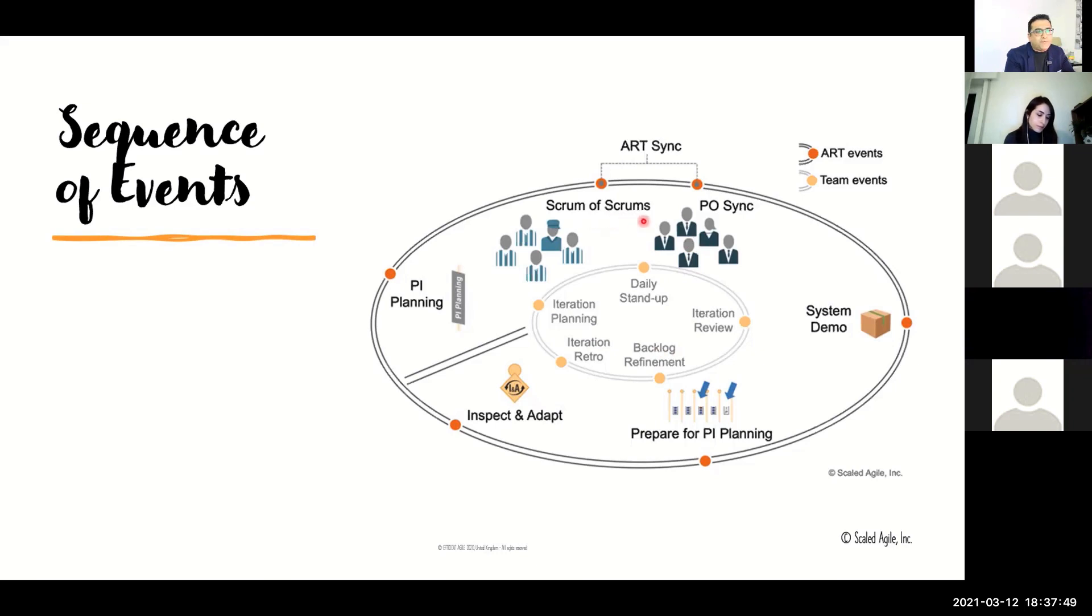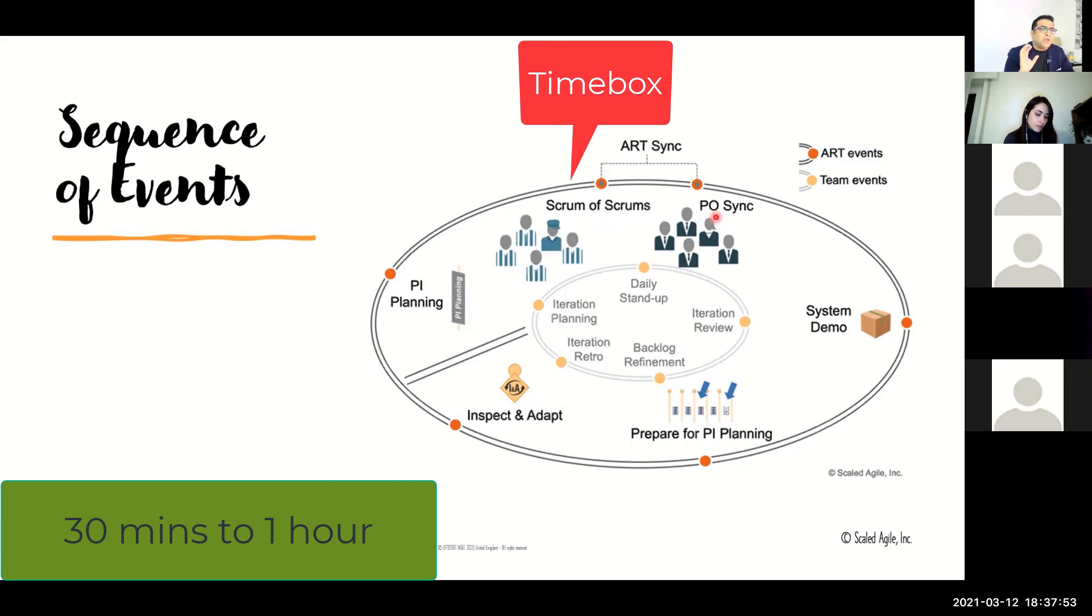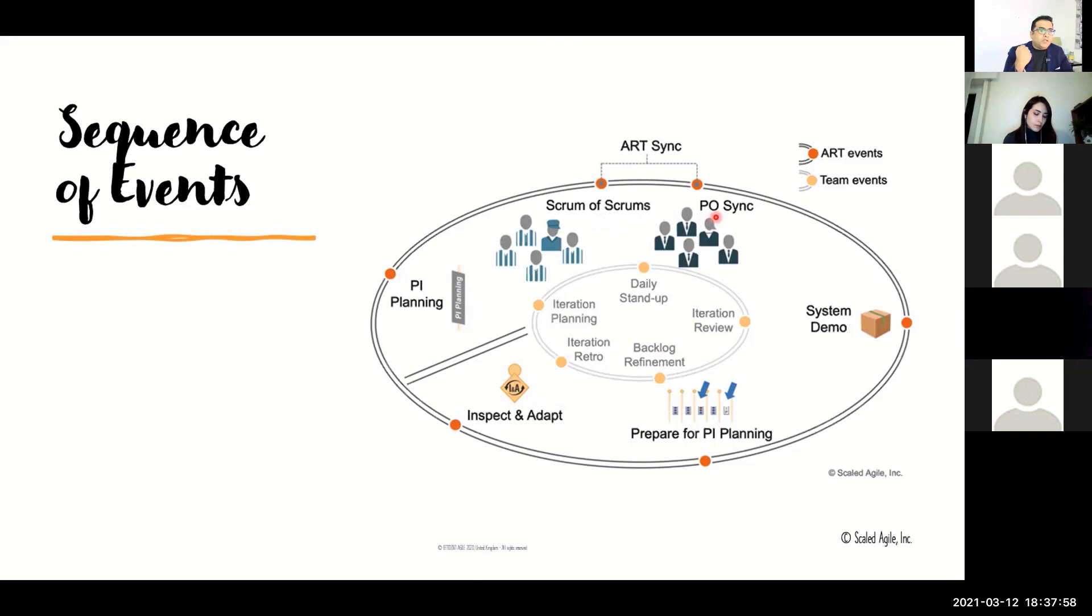There's a time box for scrum of scrums and PO sync. It could last between thirty to sixty minutes. You could do it daily, or if you want to do it two or three times a week, you could invest about thirty minutes for each of the events.